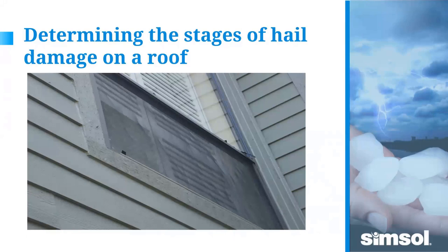When photographing supposed hail hits on a roof, always put something in the frame for scale. I like to use a quarter — it's readily available, familiar, and about an inch in diameter. Without a reference, a close-up gives no way to judge whether a hit is a quarter inch or four inches. For close-up shots, set your camera to macro mode — the little flower icon — and have the zoom all the way out for the sharpest, most detailed image.